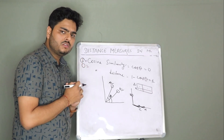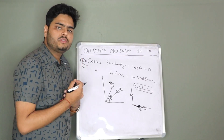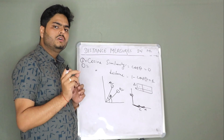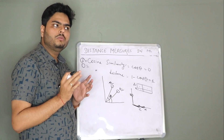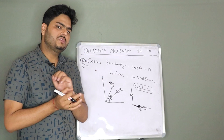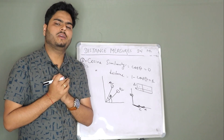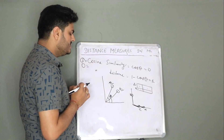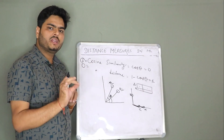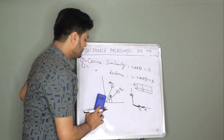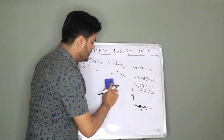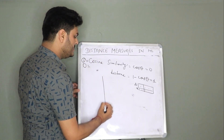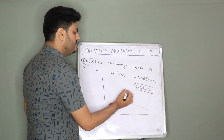Now we have seen different distance metrics. People will sometimes ask you in an interview when cosine will make sense and when Euclidean will make sense. Without being able to see data in an n-dimensional plane, it is difficult to judge. Still, you can give some business cases where one will make more sense. Let me give you some tactical examples. Let us take another example — let us take the XY plane. Let us assume this is point A, this is point B, and this is point C.